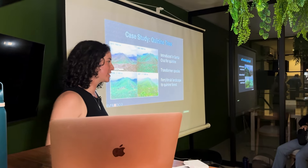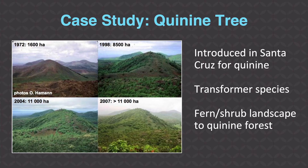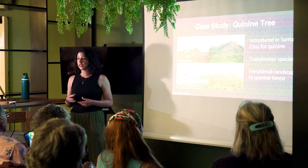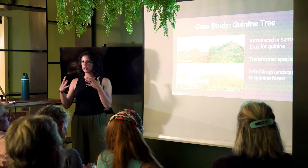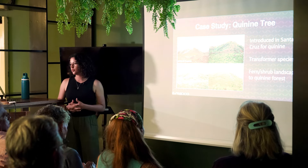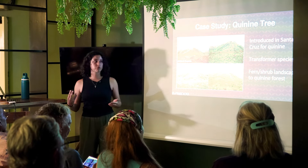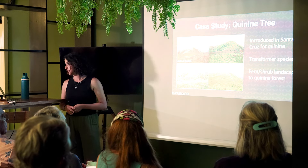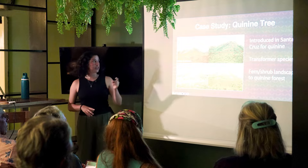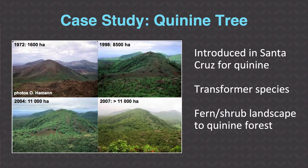The next case study is Cinchona pubescens, the quinine tree. It was first introduced in Santa Cruz in the 1940s for quinine, which was a remedy for malaria, with hopes of creating revenue. But it quickly spread from agricultural areas, particularly into the fern and shrub landscape in Santa Cruz. A comparison of photos from 1972 versus 2007 shows how the quinine tree grew and dispersed — another transformer species that changed soil composition and created a novel ecosystem.